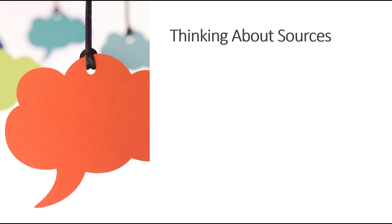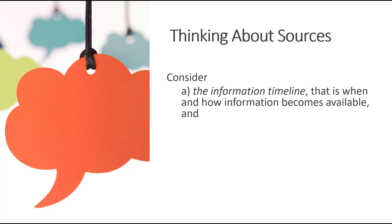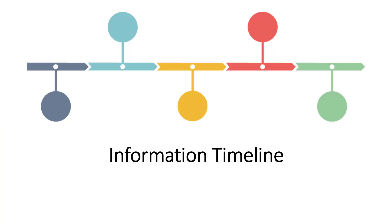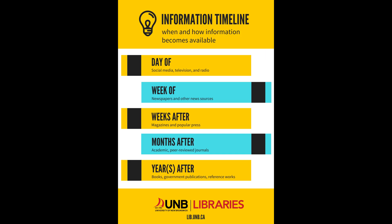When thinking about sources for your academic projects, it's important to consider: a) the information timeline — that is, when and how information becomes available — and b) how this information is used in the scholarly communication cycle — that is, when and how academics share their research. Different kinds of information become available at different times in the information timeline. When and how information is published determines what resources are appropriate and accessible for your research. Let's examine the stages of the information timeline.